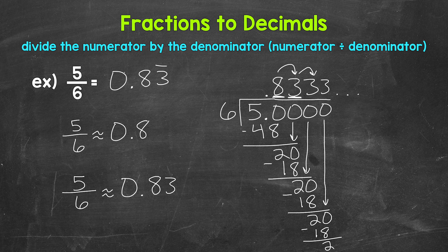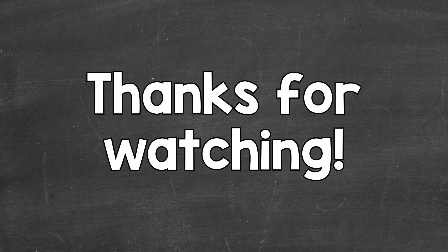So those are some different options for writing a repeating decimal — we can use a bar above the repeating digit or digits to show that they repeat, or we can round. So there you have it: that's how to convert five sixths to a decimal. I hope that helped. Thanks so much for watching!